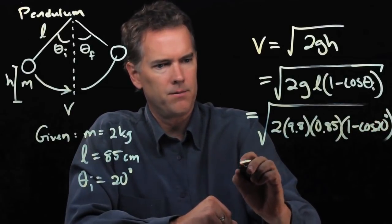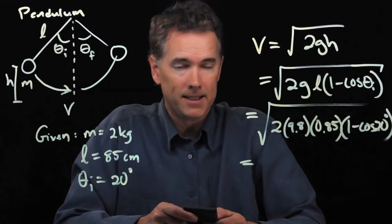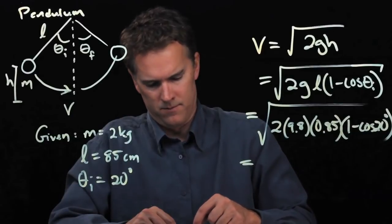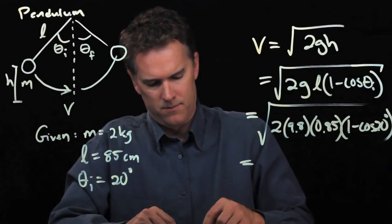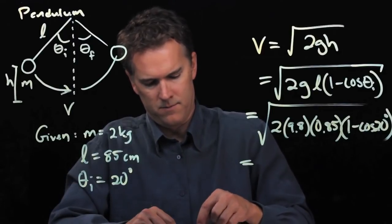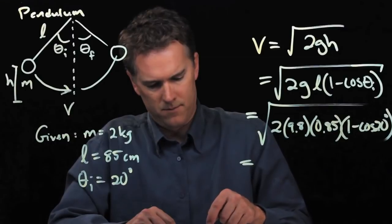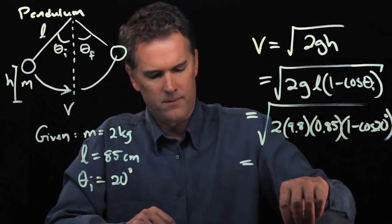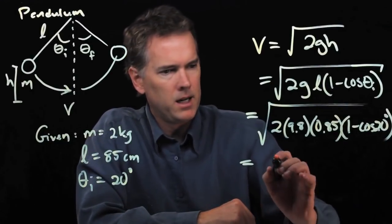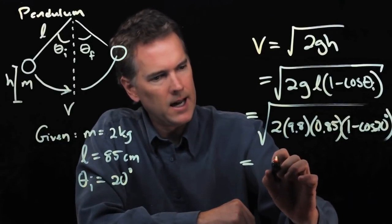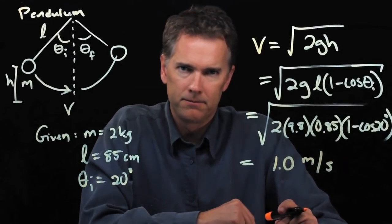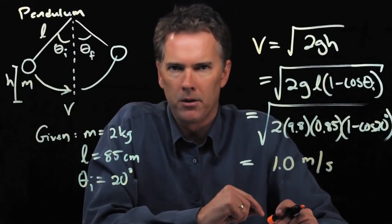Plug in all those numbers into your calculator, and let's see what we get. Double check my calculation, but when I plugged it in, I got 1.0 meters per second. That's how fast the thing is moving at the bottom of the swing.